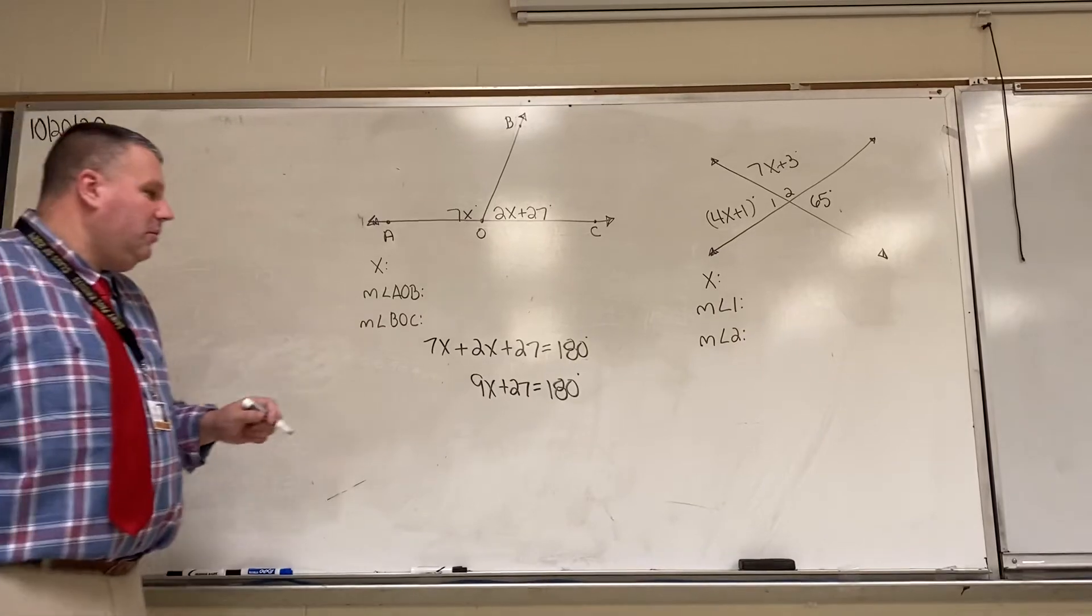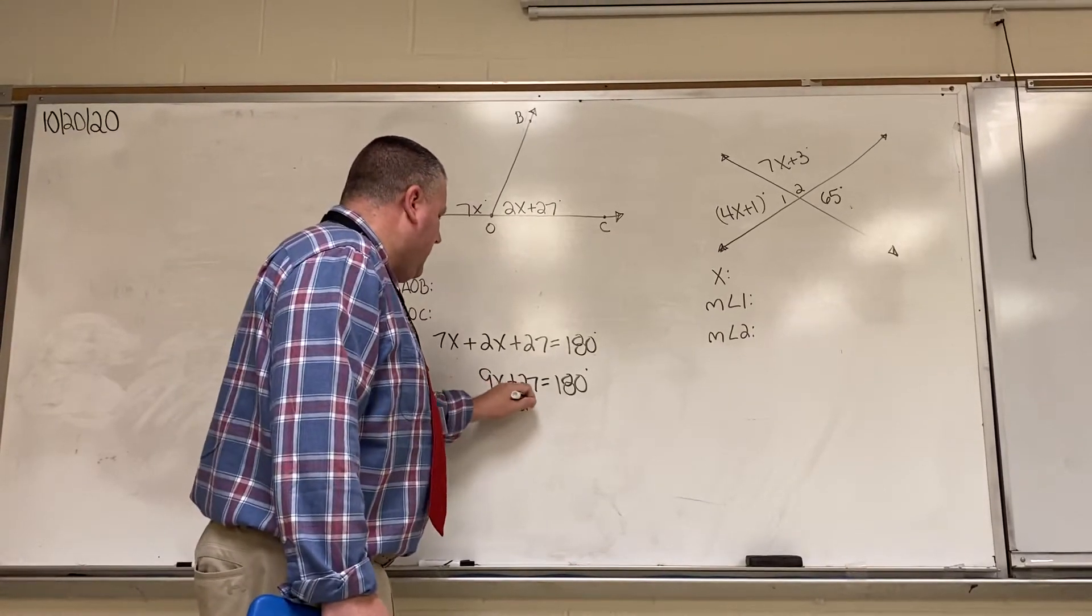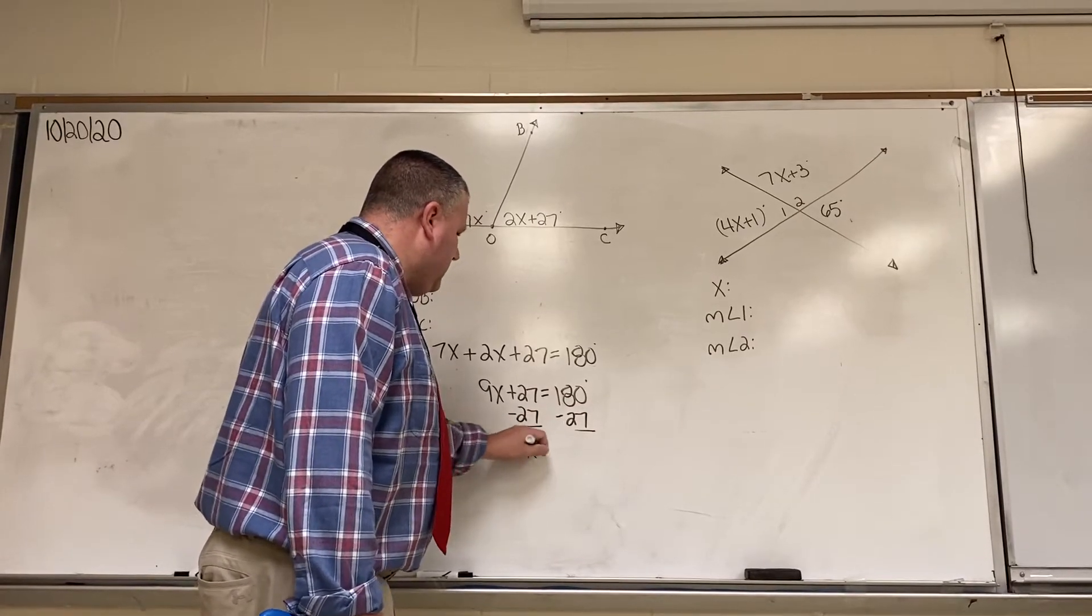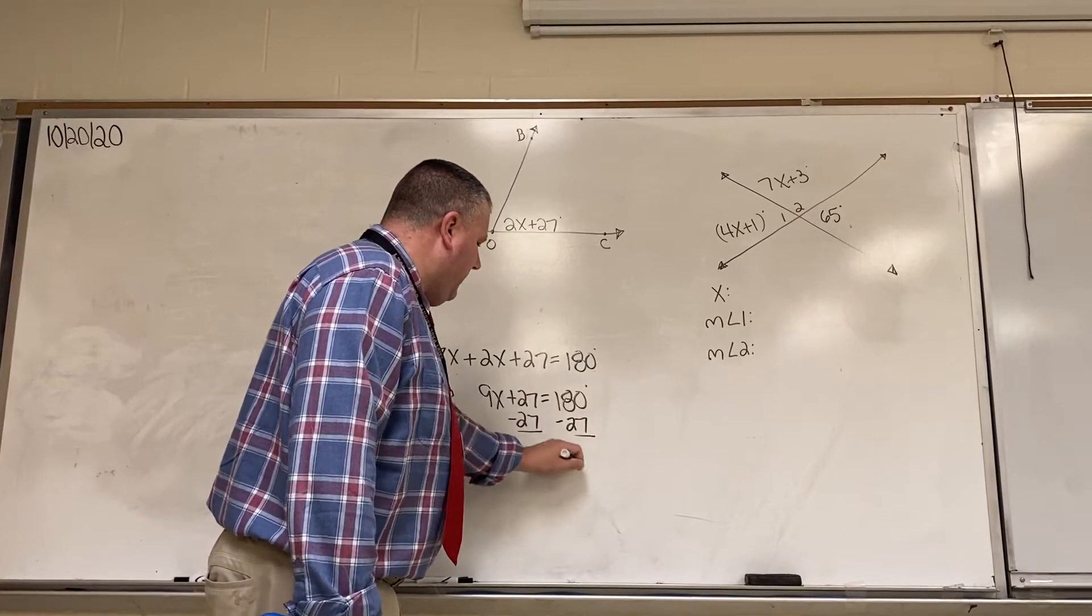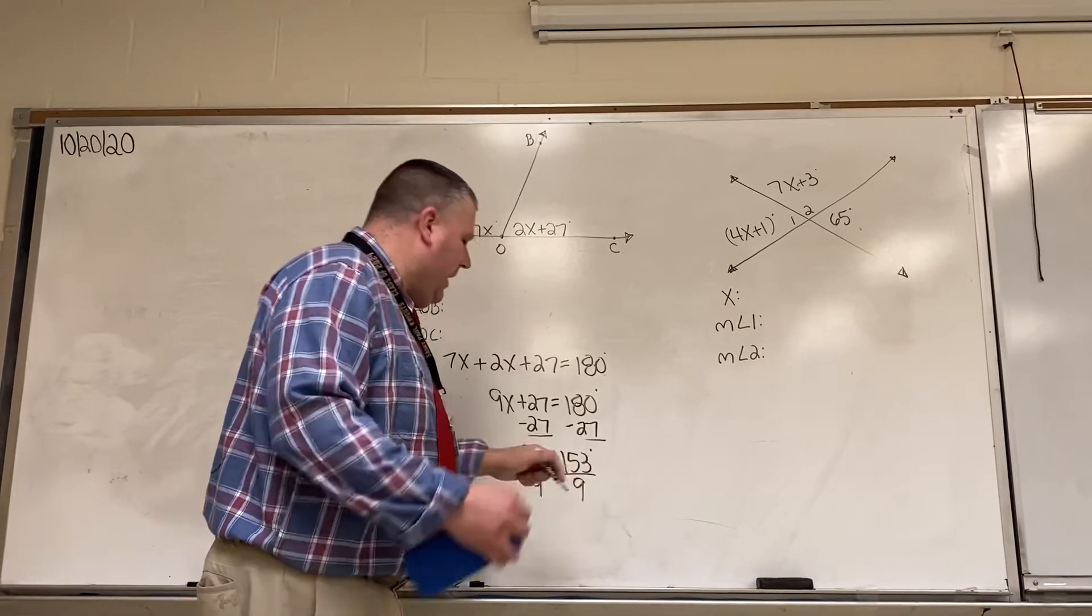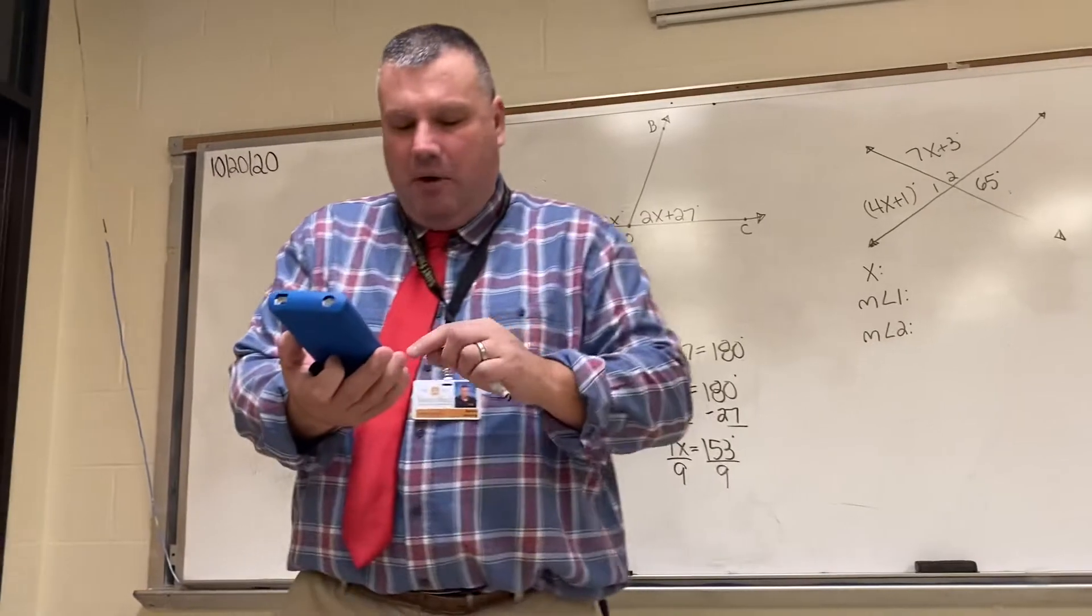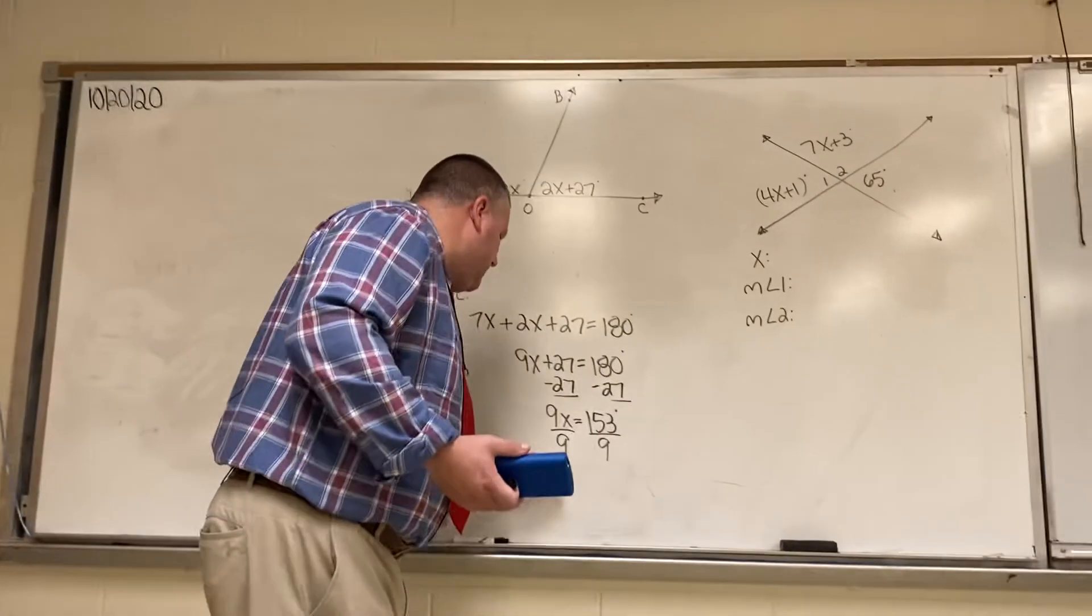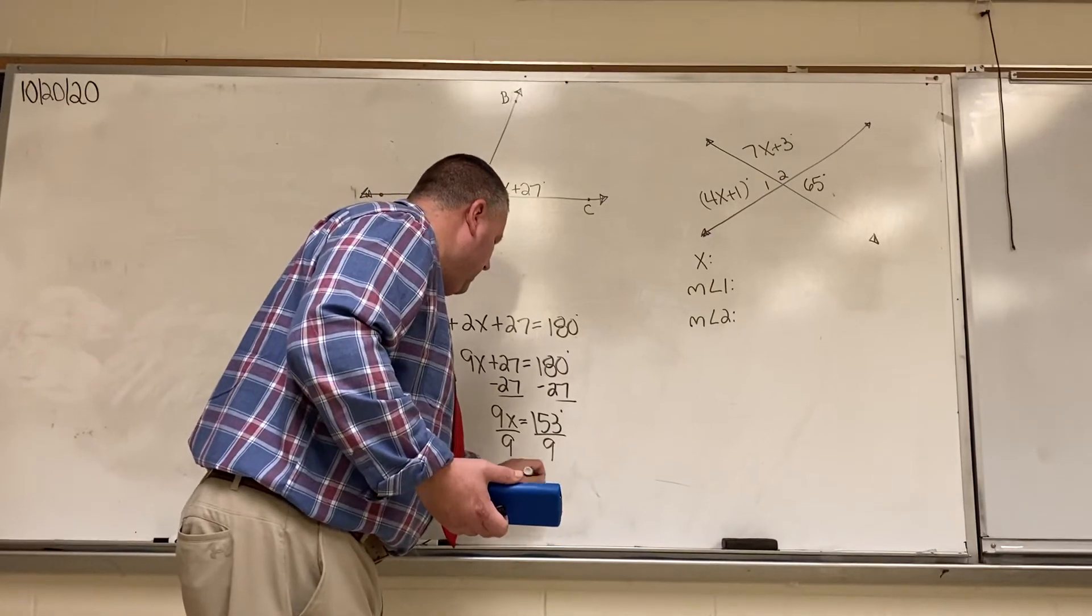Now we're going to go through and we have to get the 9x by itself. So, we're going to subtract 27 from both sides. So, 9x is equal to 153 degrees. We're going to divide both sides by 9. I'm going to go to my calculator. Make sure you're always in the correct mode. And, when we do that, we have x is equal to 17.